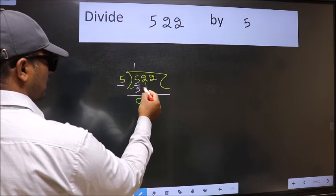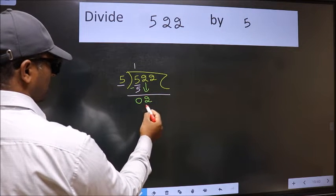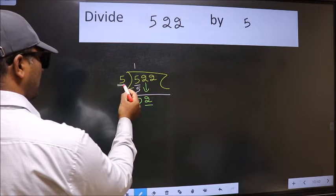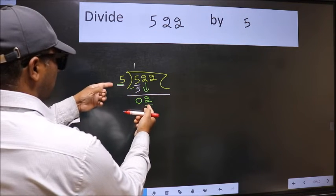After this, bring down the beside number. So, 2 down. Now, here we have 2 and here 5. 2 is smaller than 5.